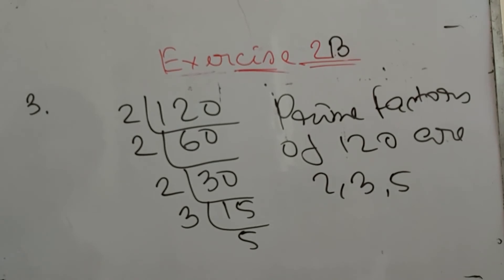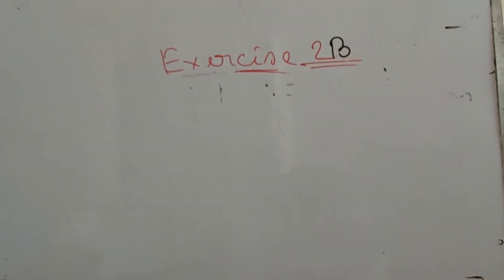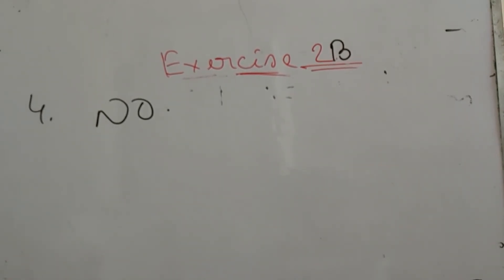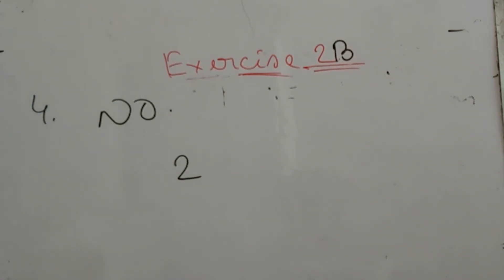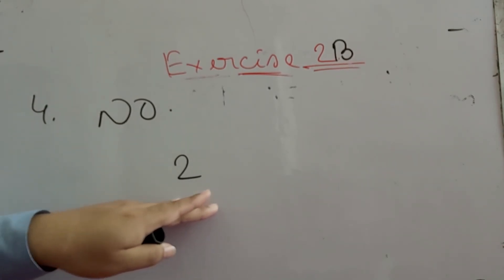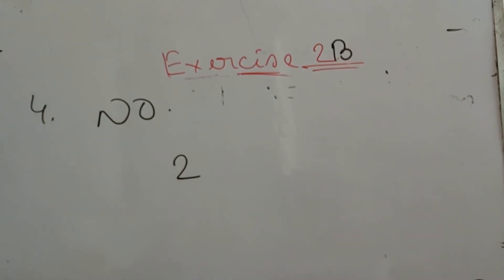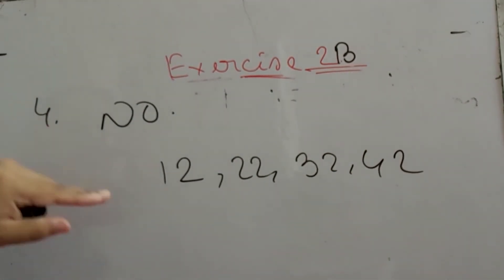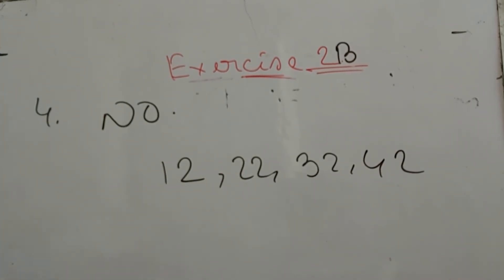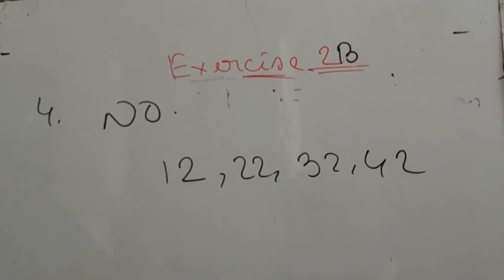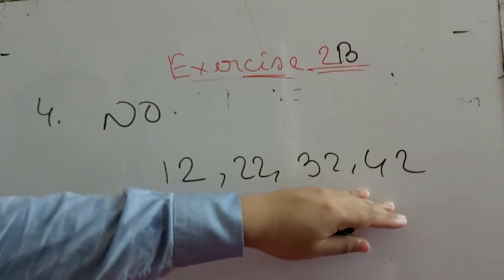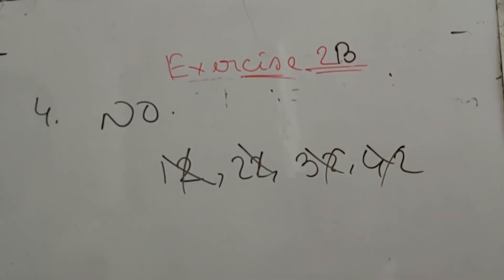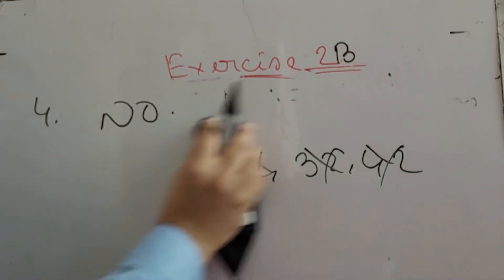Now number 4: can a prime number end with the figure 2? The answer is no. Why? We already know 2 is the only even prime number. Any number ending with the figure 2 — such as 12, 22, 32, 42 and so on — is an even number. After 2, no even number can be a prime number. So every even number cannot be a prime number, and therefore a prime number ending with the figure 2 is not possible. The answer is no.